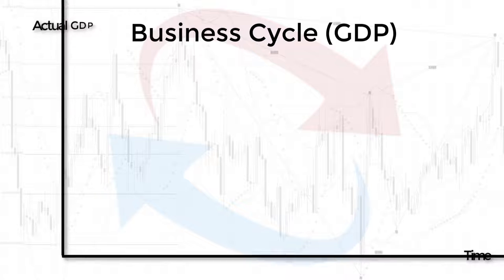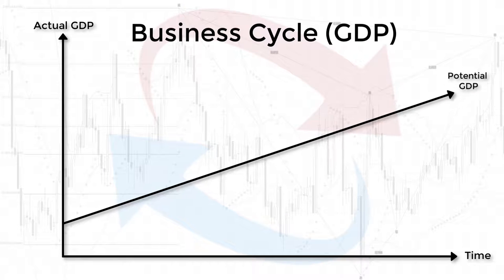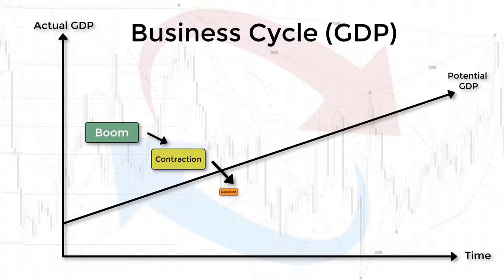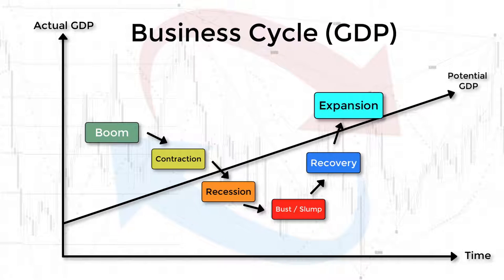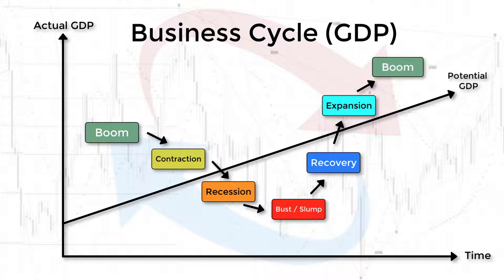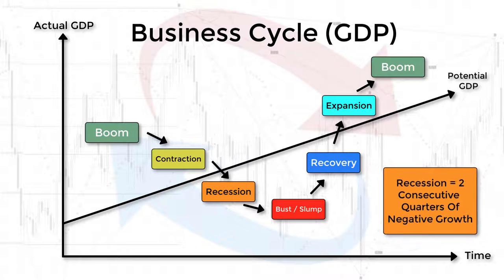The business cycle captures GDP data over time, and there are phases you would be very familiar with. By understanding where a country is on the business cycle, you can gain an edge on whether you should be buying or selling the country's currency. The stages of a country's business cycle are: boom, contraction, recession, bust or slump, recovery, expansion, and back to boom again. A country's business cycle is considered in a recession if they have two consecutive quarters of negative growth.